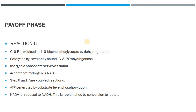Now moving to the payoff phase: glyceraldehyde-3-phosphate is converted to 1,3-bisphosphoglycerate by the enzyme glyceraldehyde-3-phosphate dehydrogenase. Phosphorylation also happens along with this reaction. The phosphate donor is inorganic phosphate, and the electron acceptor is NAD+. Steps 6 and 7 are coupled reactions because ATP is generated in the next step.